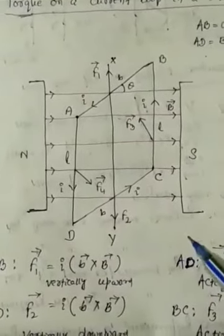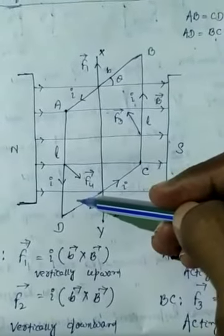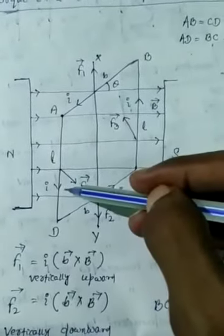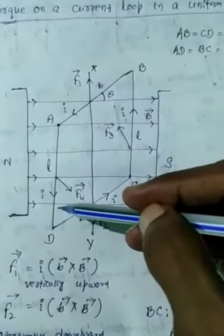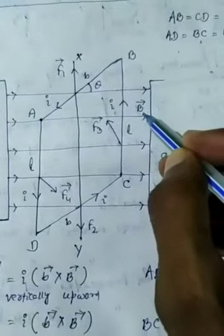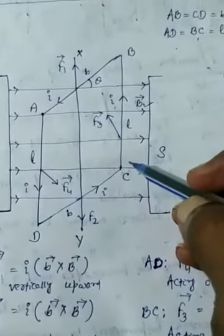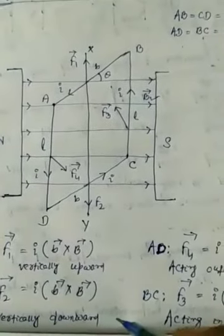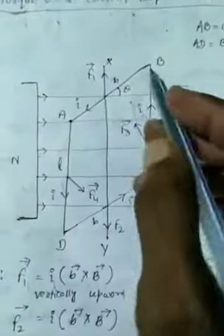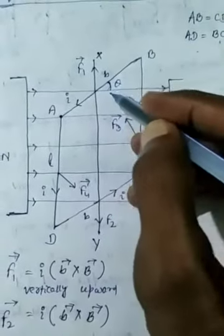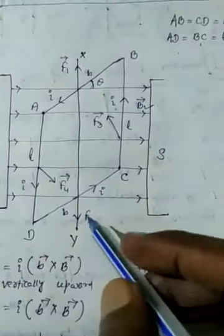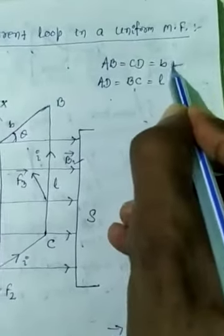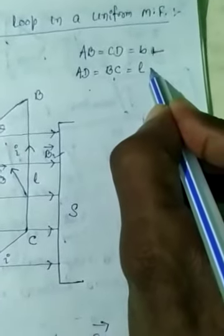Let us consider a rectangular loop A, B, C, D carrying a current I which flows in anti-clockwise direction and which is situated in a magnetic field or magnetic induction B. The loop is rotated along a vertical axis X, Y. Let the plane of the loop make an angle theta with the direction of the lines of force. Let AB equal to CD equal to length B, and AD equal to BC equal to length L.